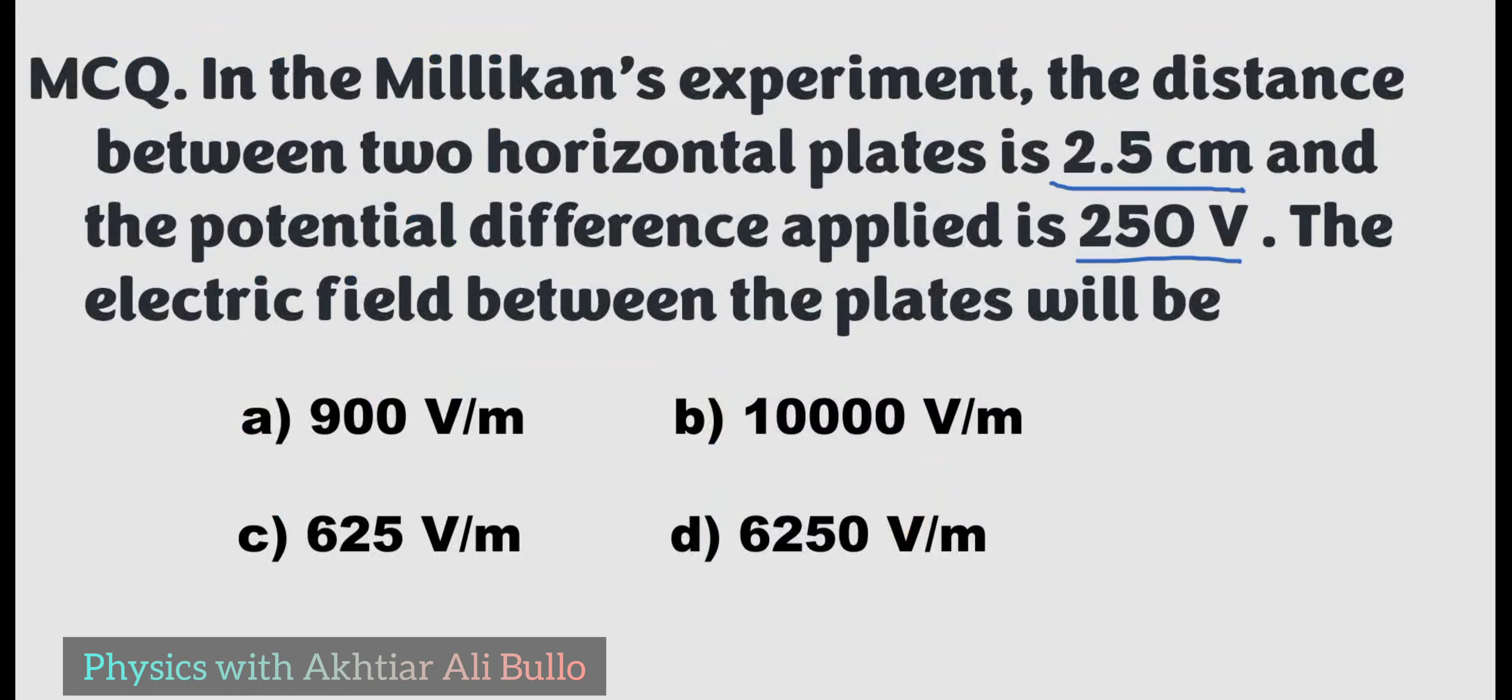We know that V is equal to E times D. So to find the electric field, this becomes E equals V upon D. V is given as 250 volts.